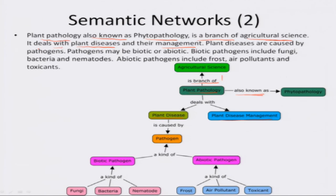Plant diseases are caused by pathogens. The concepts here are plant diseases and pathogens, so we plot pathogen as a concept and link it to the plant disease concept by means of the 'is caused by' relationship. Pathogens can be of two kinds: biotic pathogen and abiotic pathogen, which we plot as concepts linked to pathogen by a 'kind of' relationship.